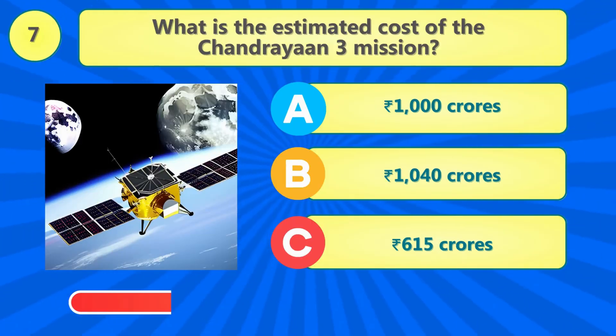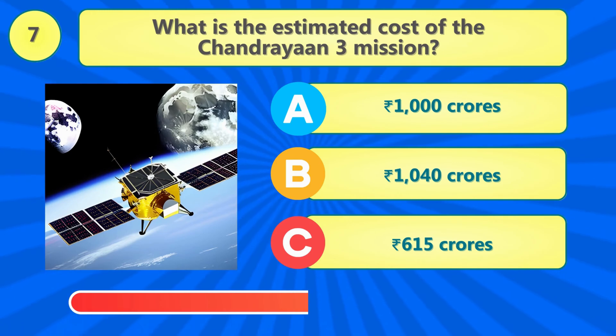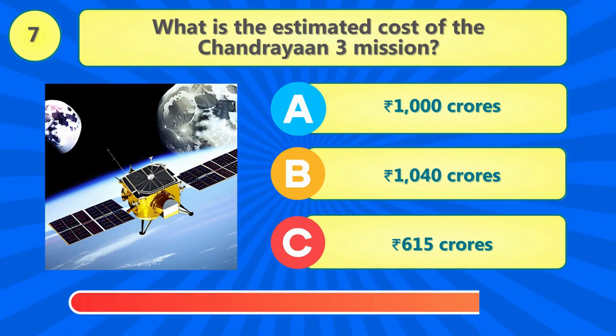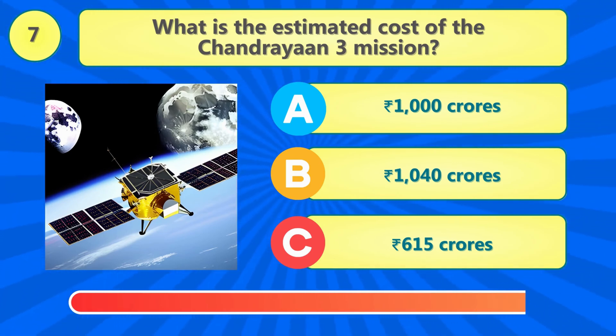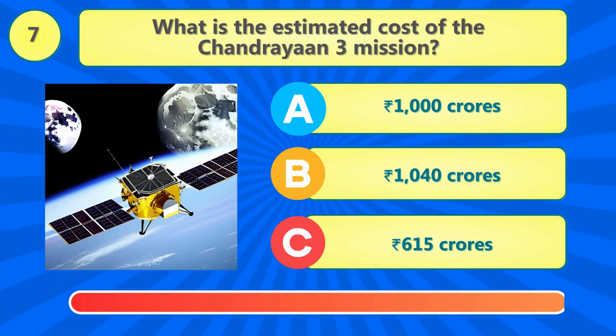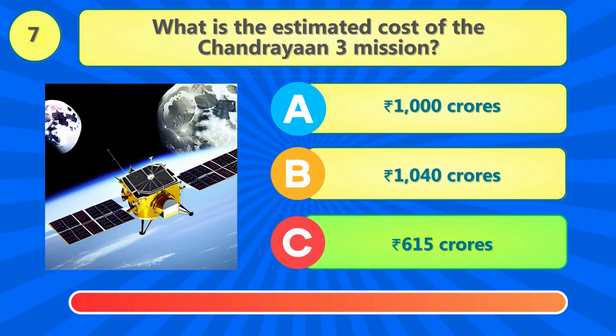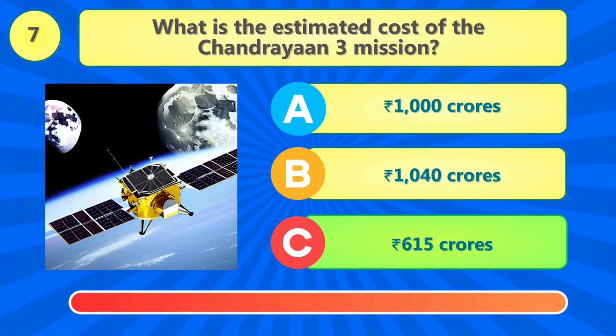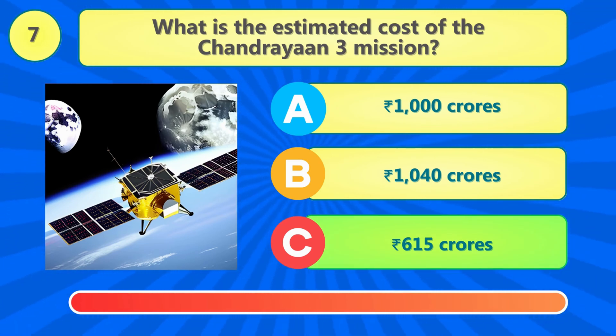What is the estimated cost of the Chandrayaan 3 mission? The correct answer is 615 Indian rupees crores.